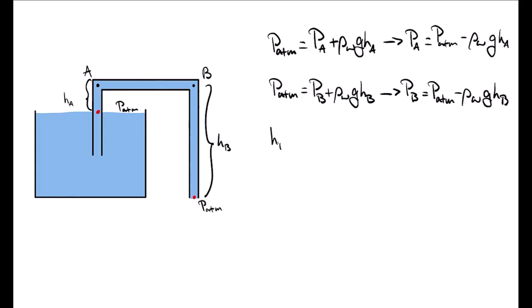Now, the height of the fluid column at B is greater than that than the height of A. Therefore, we can say that the pressure at point A is greater than that at point B.